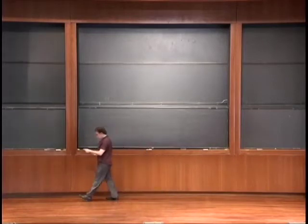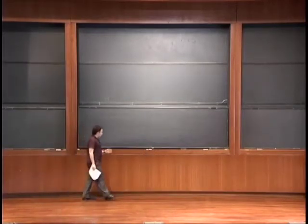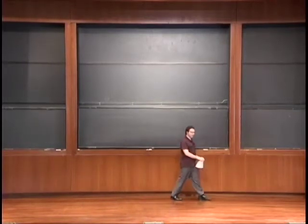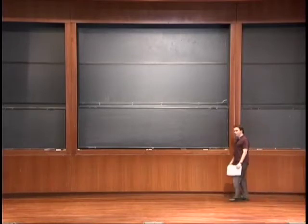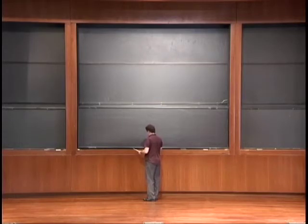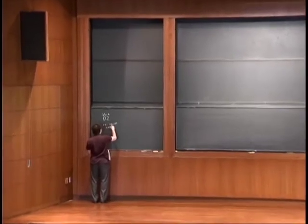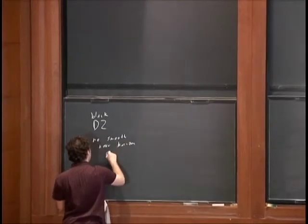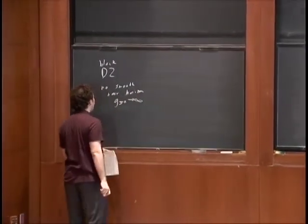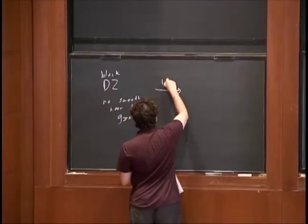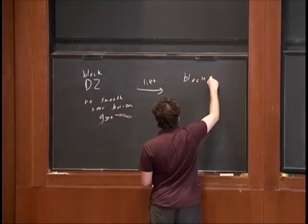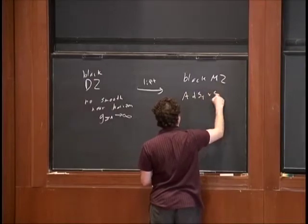At the end of the last lecture, I had written down the black M2 brane solution and the black D2 brane solution. In the black D2 brane, there's no smooth near-horizon limit — the type IIA coupling becomes strong in the near-horizon region. It's natural to lift it to M-theory, which does have a smooth near horizon. The black M2 brane has an ADS4 cross S7 near-horizon geometry.